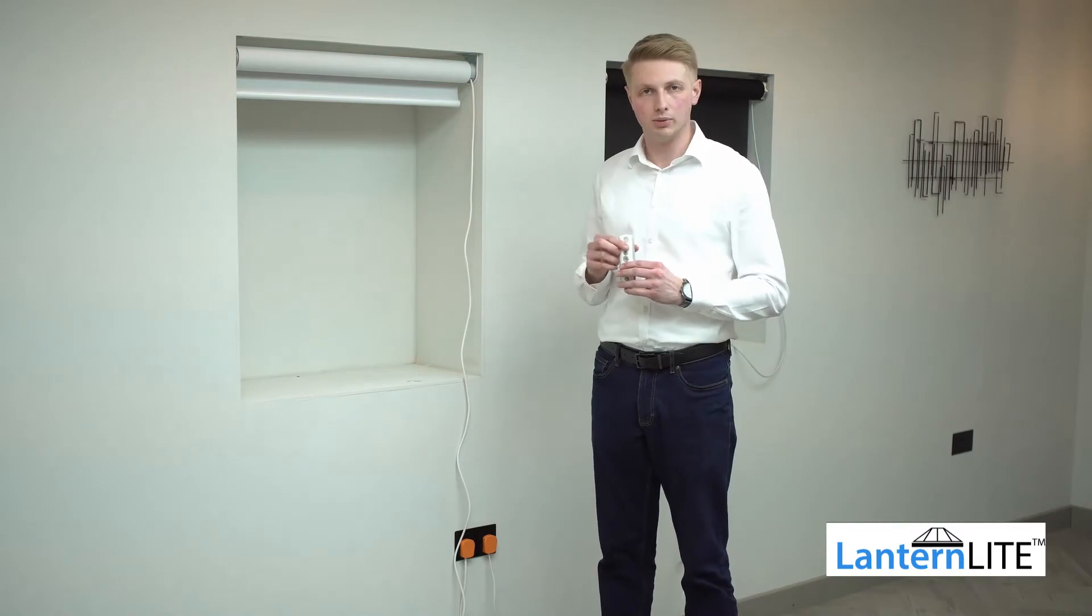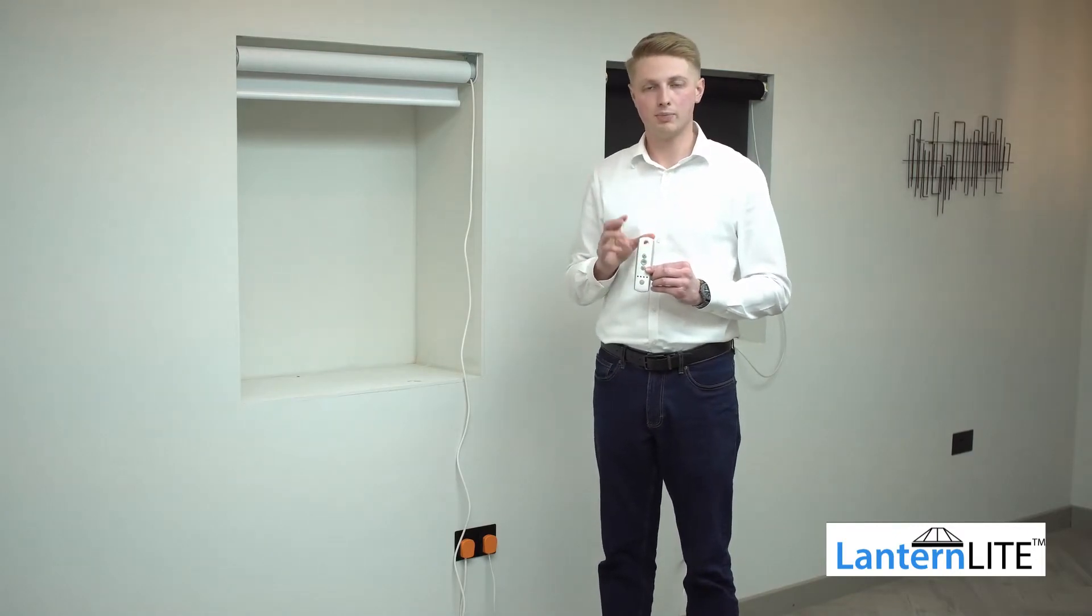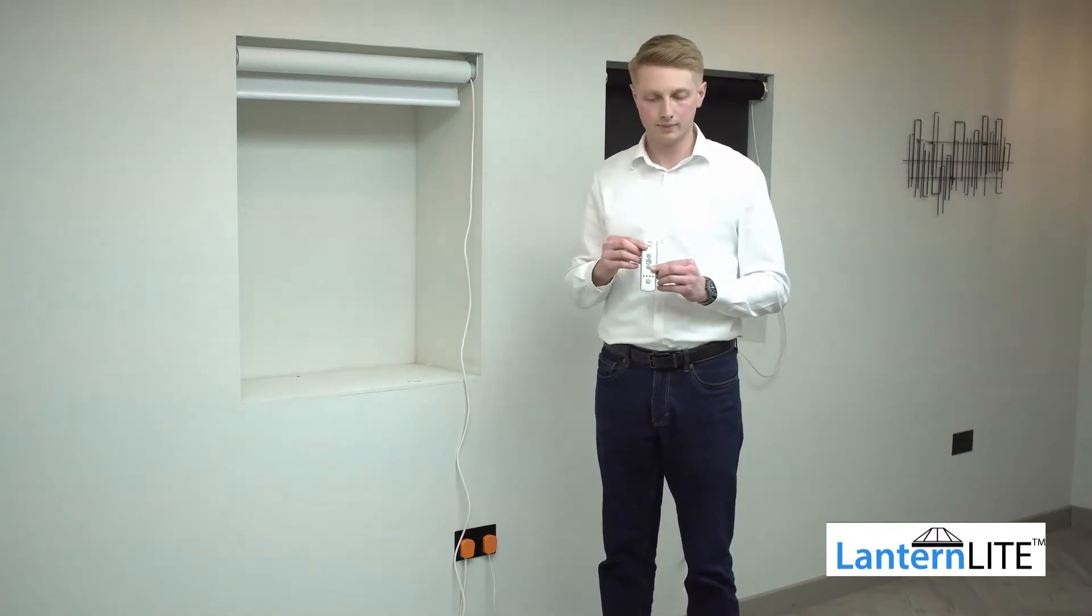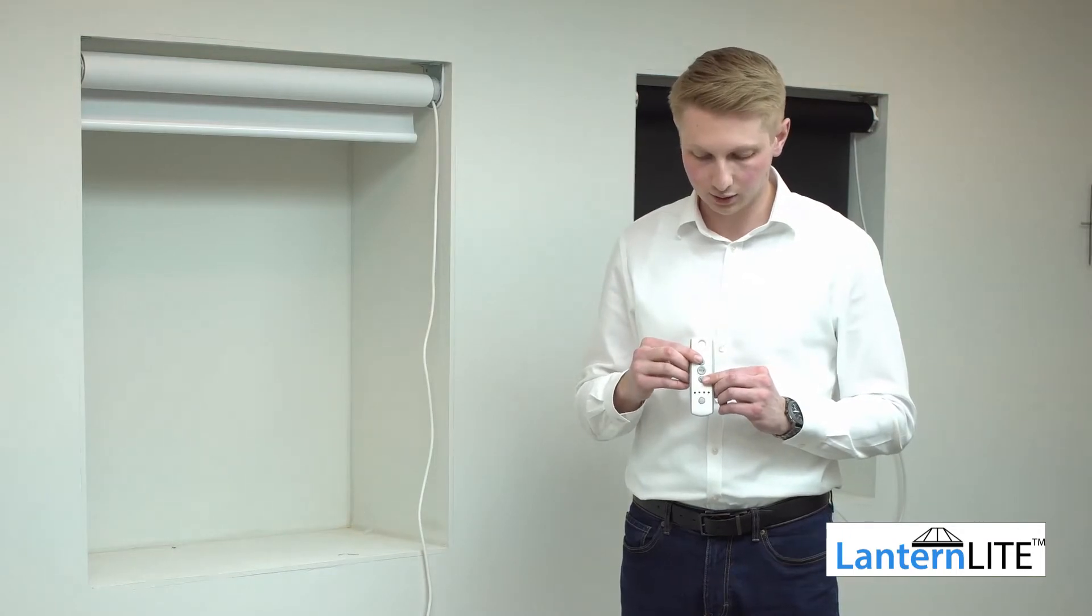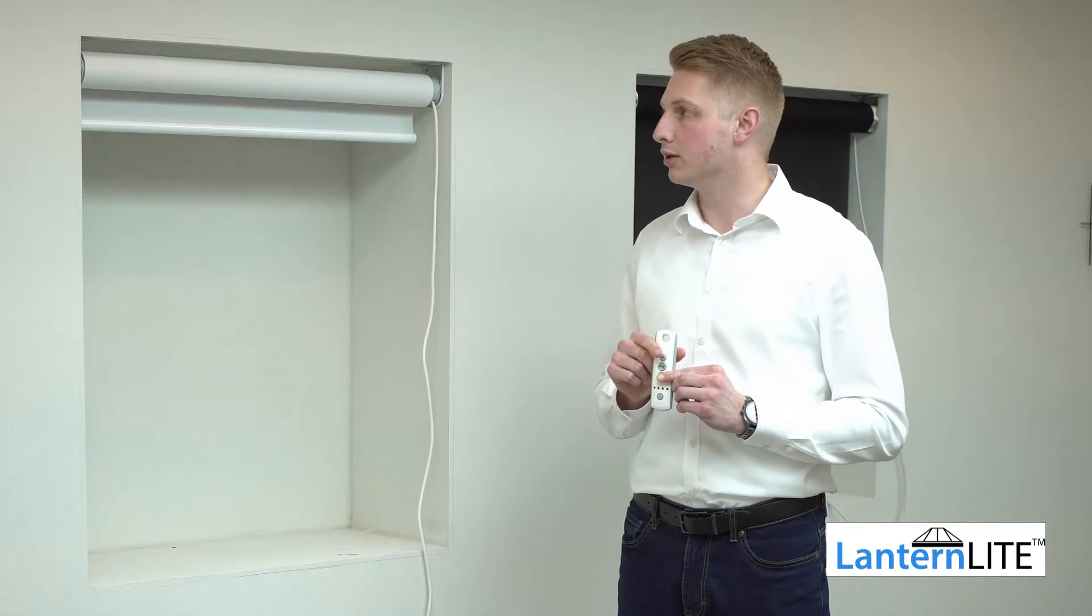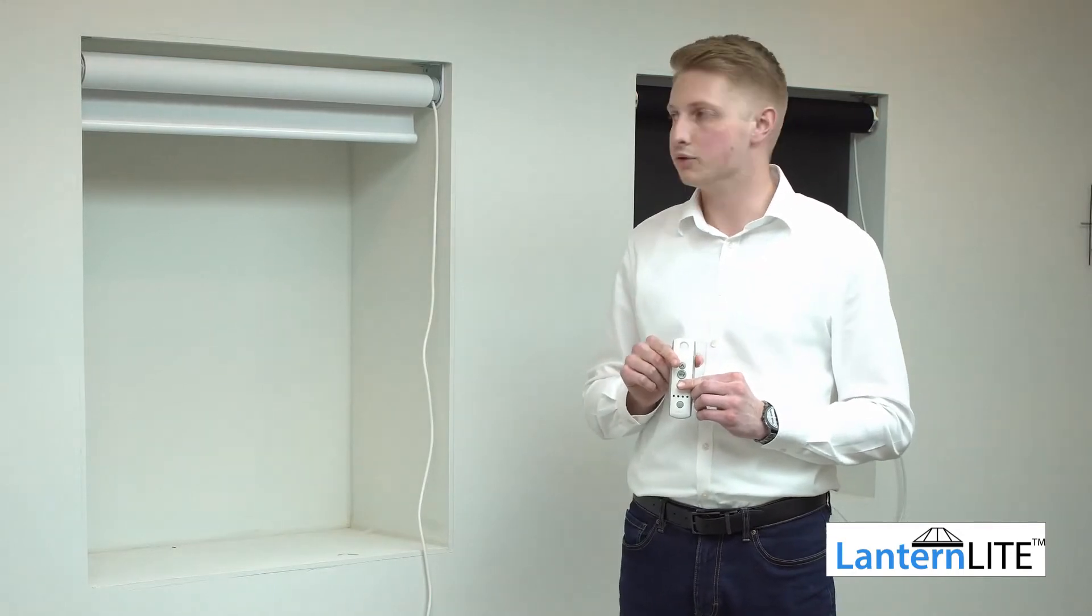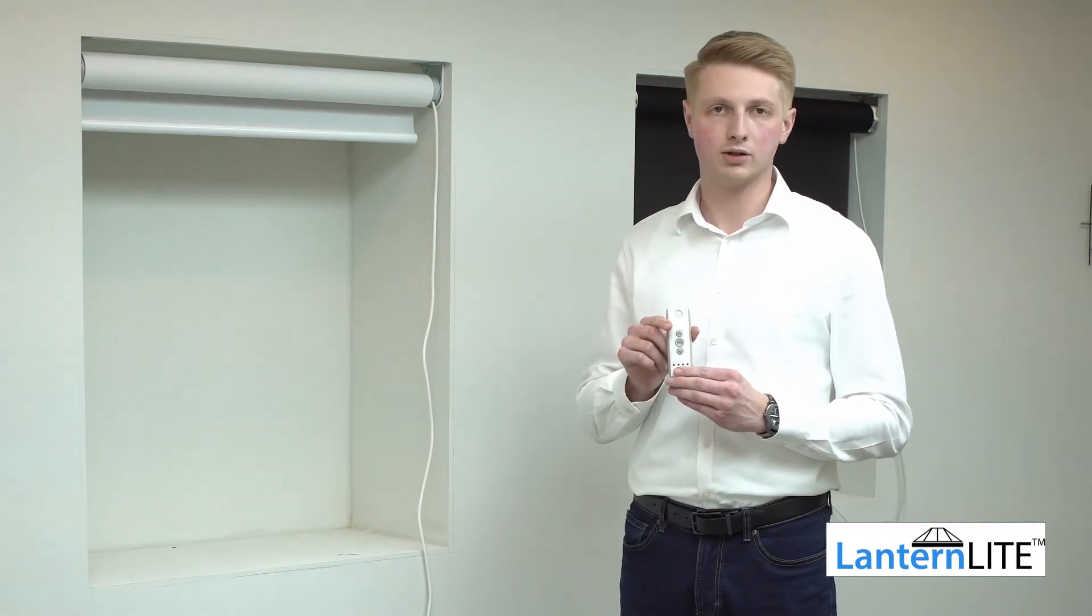Now that the power is going to the blind, you have 60 seconds to pair the remote control to the motor. This is done by pressing and holding the up and the down buttons together. The blind shunts to give you feedback that the pairing has been successful.